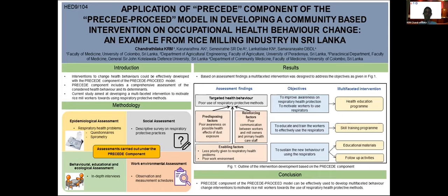Based on those findings, we set four objectives, and I will describe the intervention components addressing each objective. To improve awareness on respiratory health protection and to motivate workers to use respirators, we addressed this through a health education program. To educate and train the workers to effectively use respirators, we developed a skill training program. To sustain the new behavior of using respirators, we used educational materials and follow-up activities conducted by the principal investigator and public health inspectors.